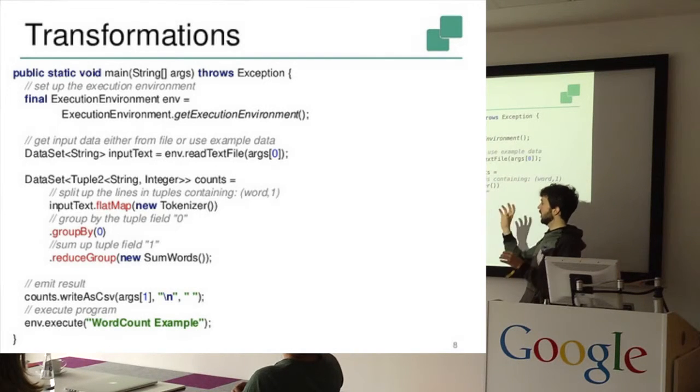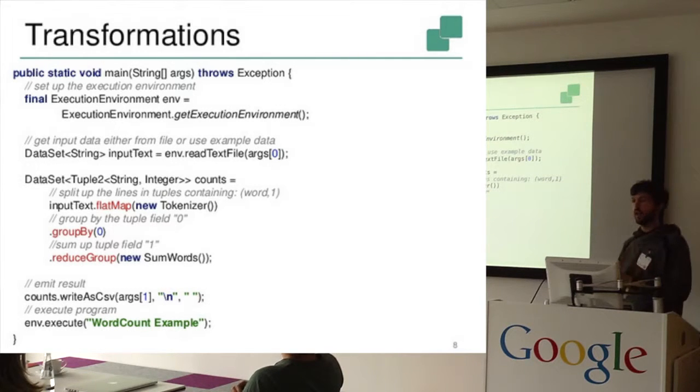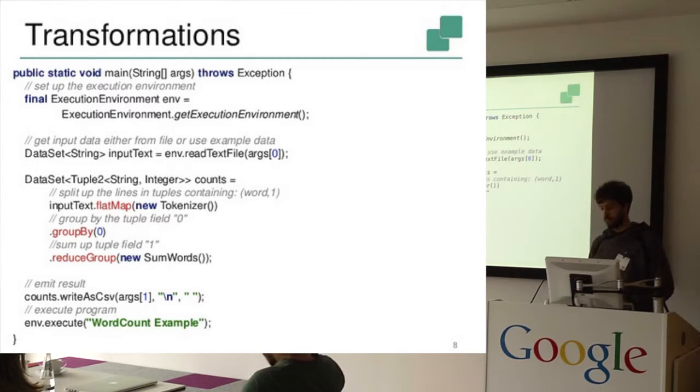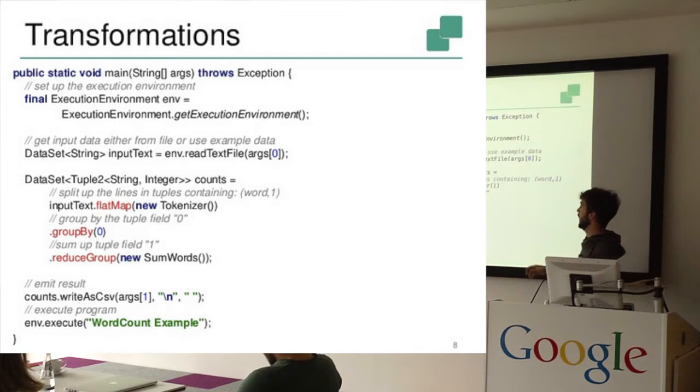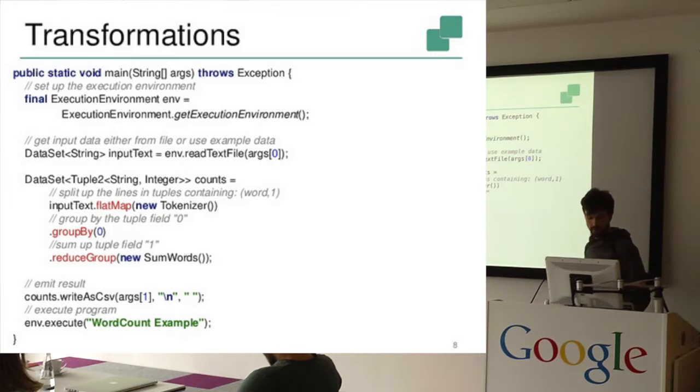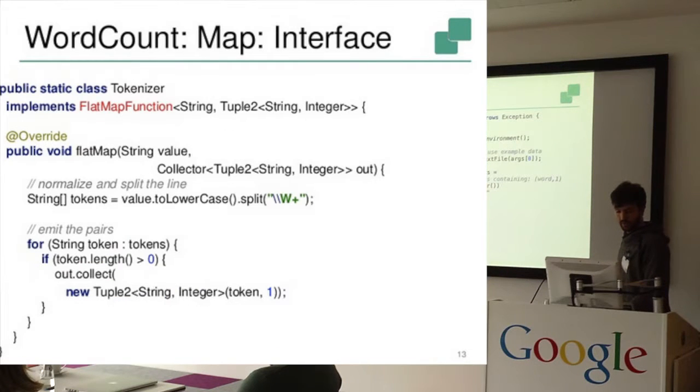Then it would discretize the words, the text, into individual words using a flat map, group by identical words, and reduce the words which are the same to count the words. So we can look at how these operations are actually implemented on the next slide.